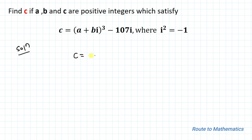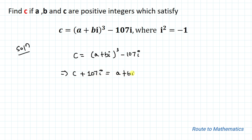Without any delay, let's start the solution. We have the given equation: c equals a plus bi whole cube minus 107i. This can be rewritten as c plus 107i equals a plus bi whole cube.